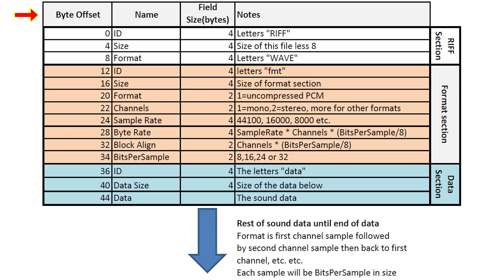The byte offset is the position in the file or memory where this part starts. The RIFF ID is stored at offset 0, right at the start of the file. It is literally the letters R-I-F-F capitalized and takes up four bytes, so the next data starts at offset 4. The next important one for us is the format at offset 8, which should contain the letters W-A-V-E if it's a WAV file. When we look at the code, you'll see that we make some checks on these things and reject the file if it's not correct.